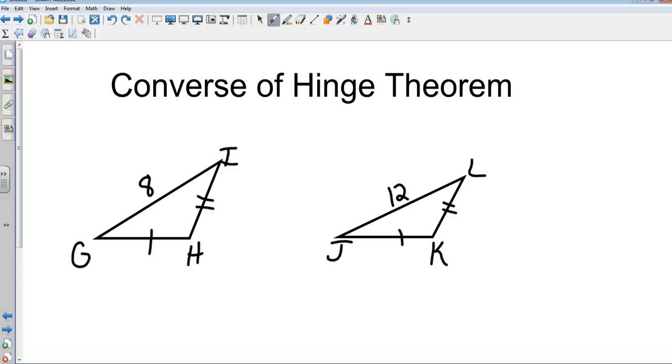In the hinge theorem we proved that the opposite side was bigger. In this case we know the sides, so what we're going to be talking about is the relationship of the opposite angles from the sides. I'm going to go ahead and just label that angle H and then label this one angle K.